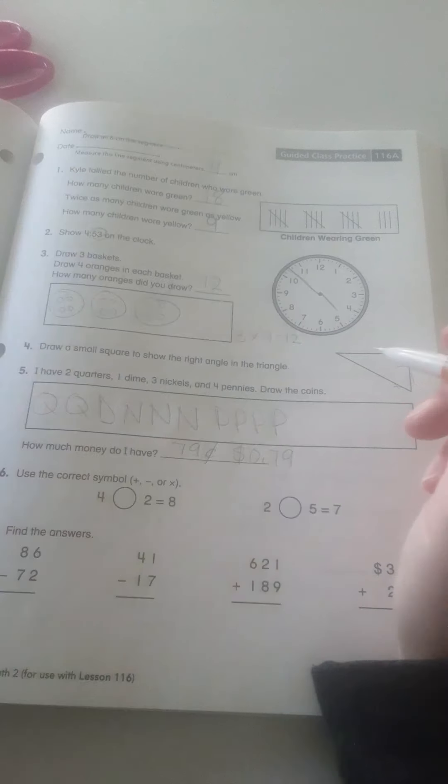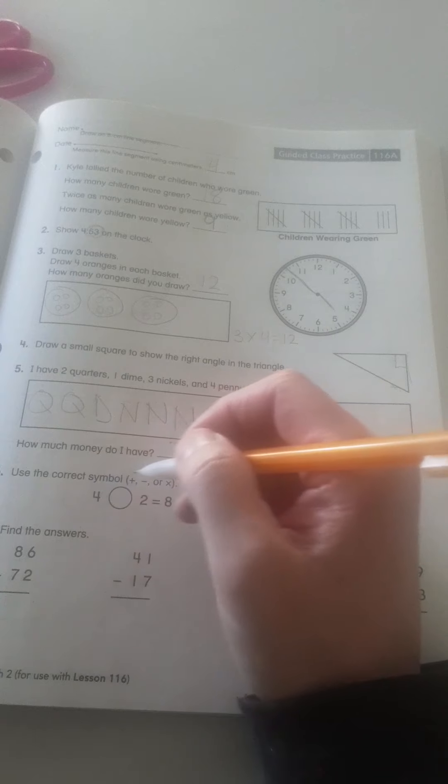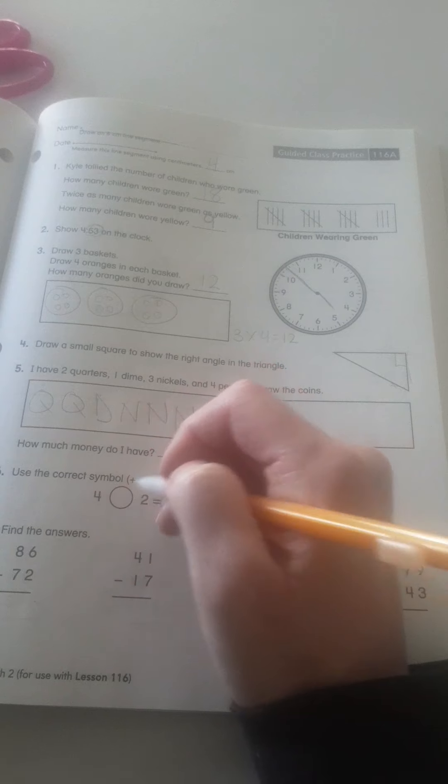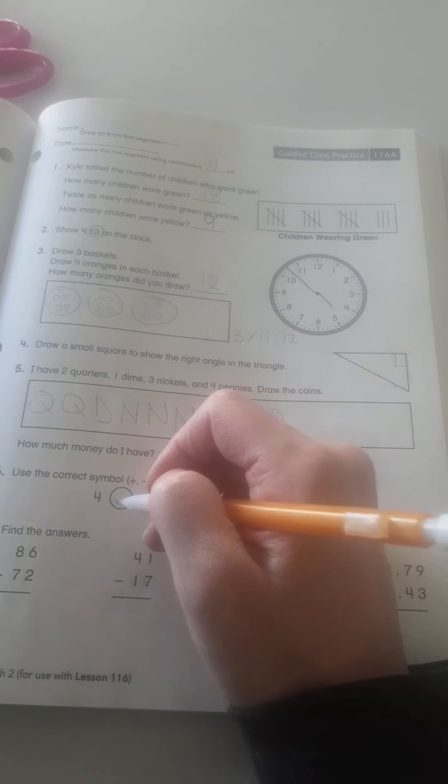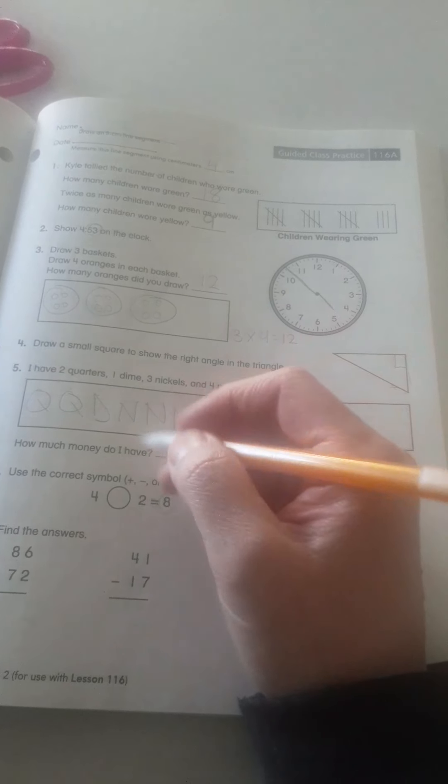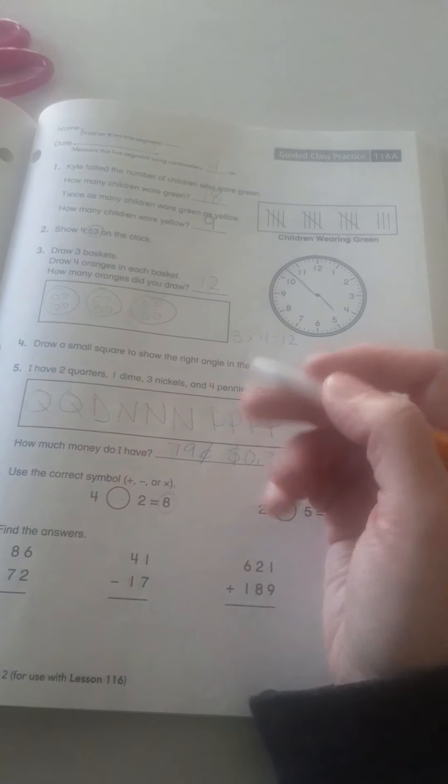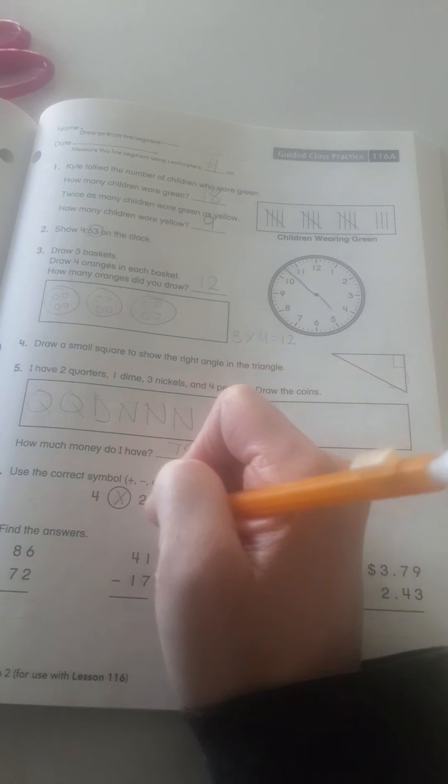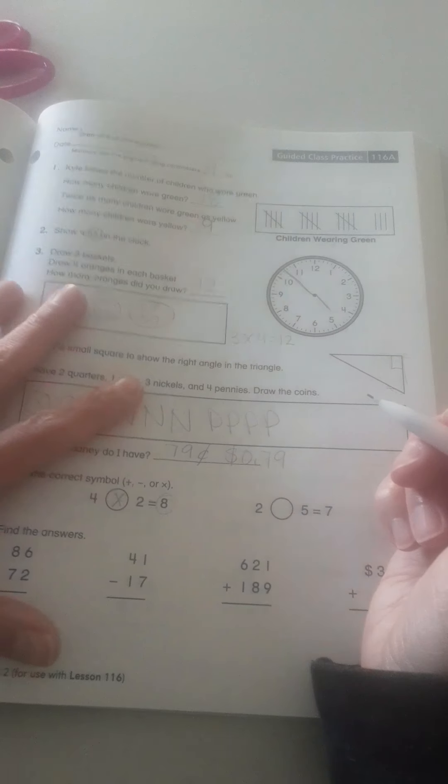Use the correct symbol. So, we need it to equal, says it's going to equal 8. So, what would I put here to equal 8? Well, if I put plus, 4 plus 2, that's only 6. If I did subtraction, 4 minus 2, well, that's 2. But if I did 4 times 2, is 4 times 2, 8? Yes, it is. So, that's why I need a multiplication sentence there.